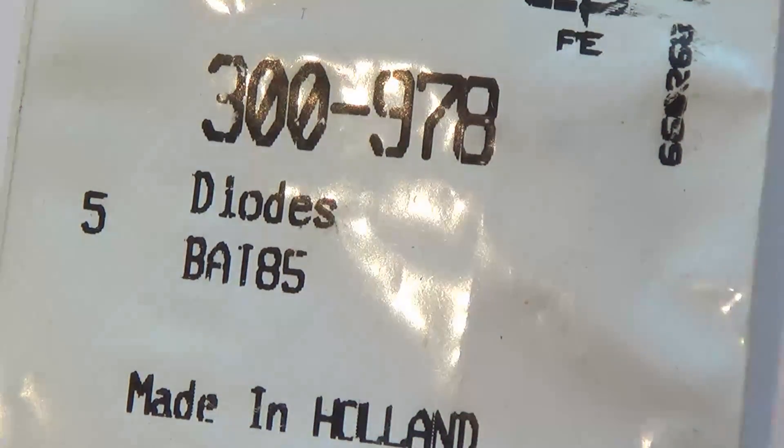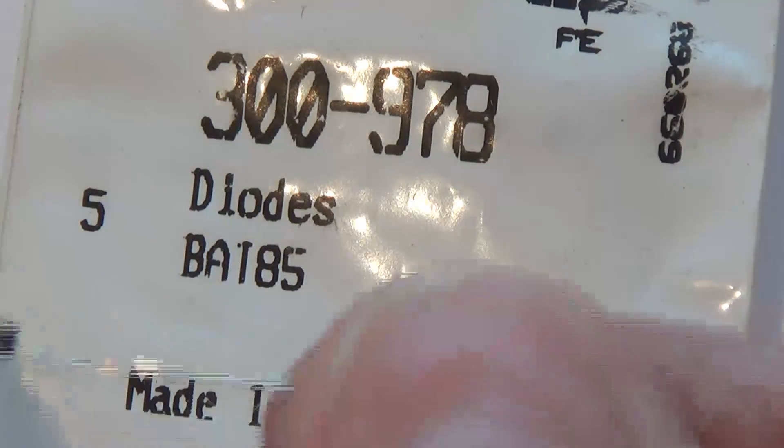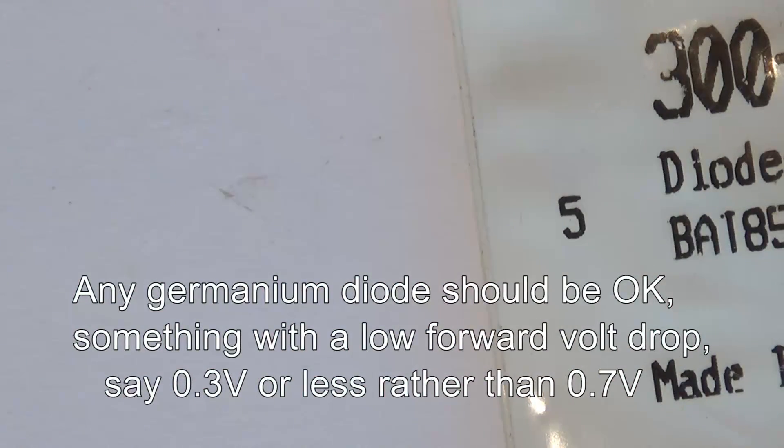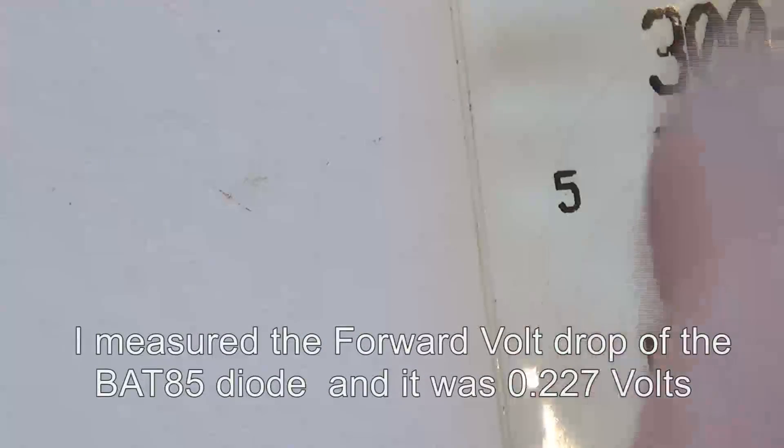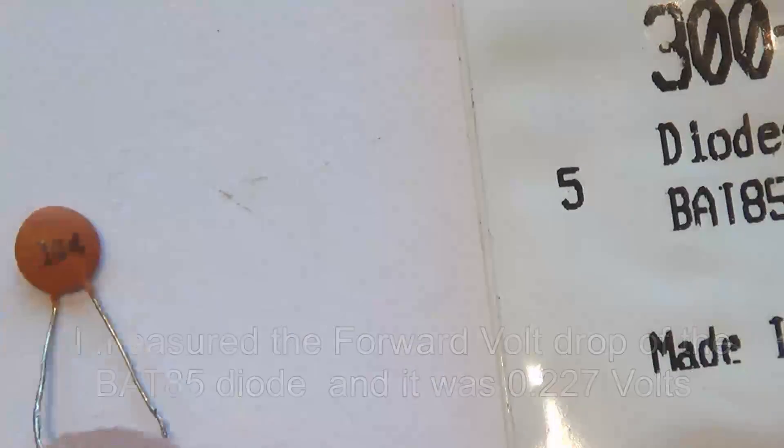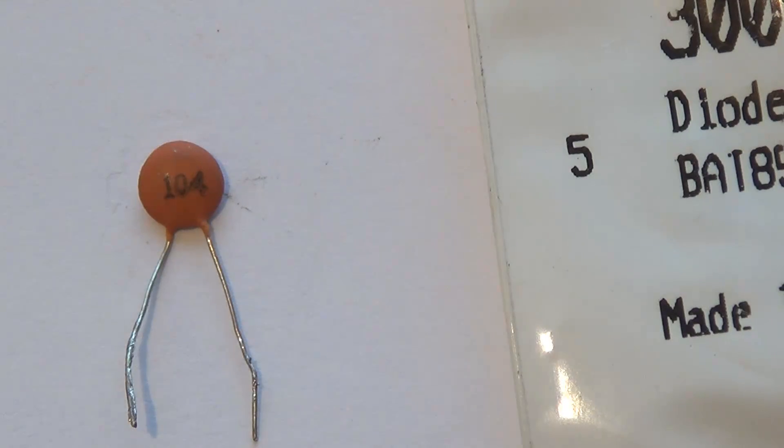The diode that I'm going to be using is a BAT 85 - that's this tiny little fella here. It wants to be a signal diode really, it doesn't want to be a switching diode. A nice germanium diode like a 1N47 would do the job quite happily, but anyway I'm using the BAT 85. And the capacitor is going to be a 0.1 microfarad, so that's 100,000 picofarad, 100 nanofarad, or 0.1 microfarad however you like to call it. The number on that is 104.